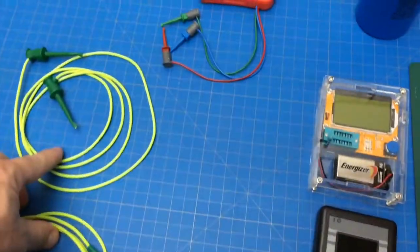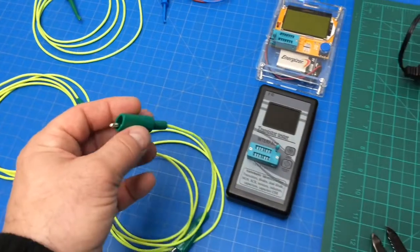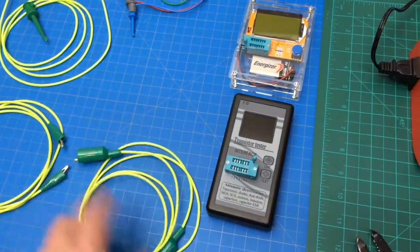So what I'd like to do is these two, I'll probably cut down about that length, and then this larger alligator clip, I'll make a little bit longer.